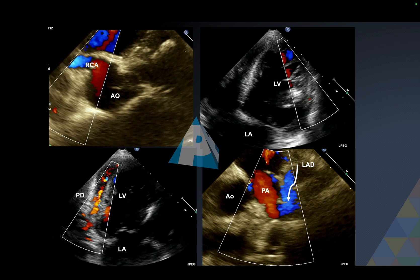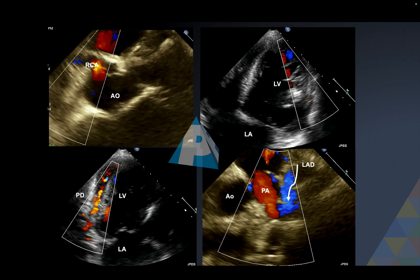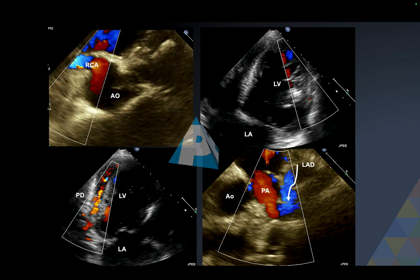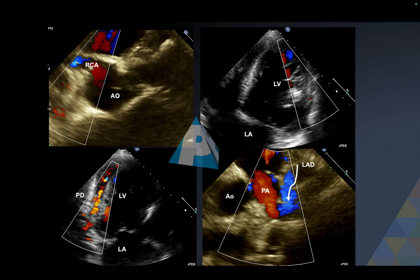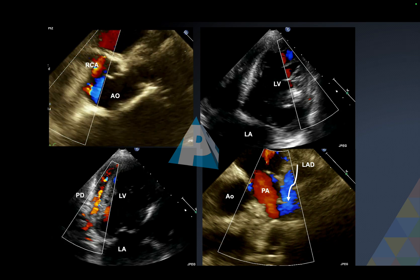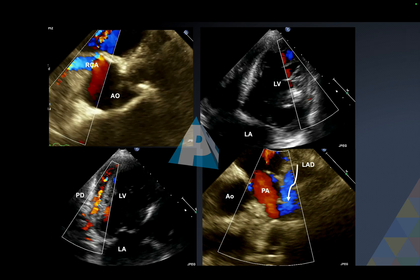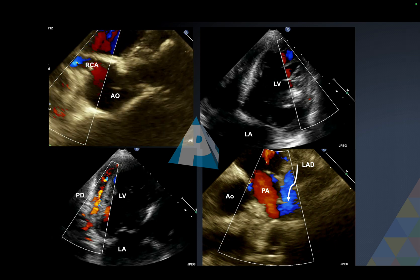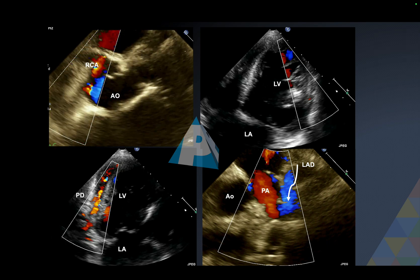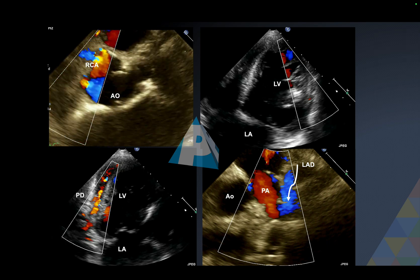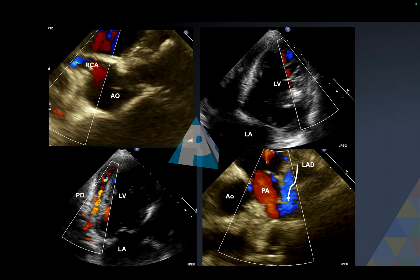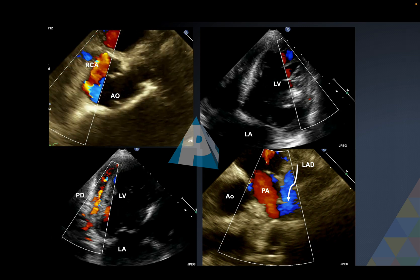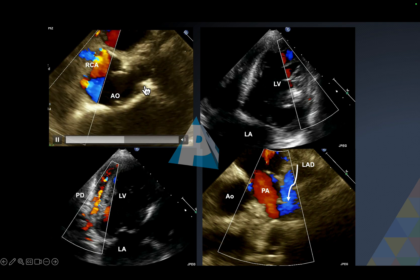To rule out ALCAPA, you must document the left coronary artery arising from the aorta or the left coronary sinus. This is very important in the neonatal or pediatric population where you have a patient with heart failure, reduced LV ejection fraction, or regional wall motion abnormality. You must look for the left coronary artery arising from the aorta to rule out ALCAPA.